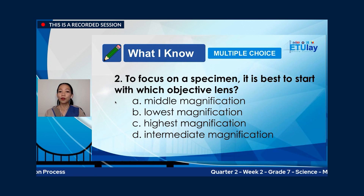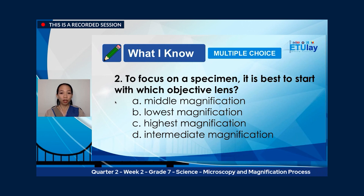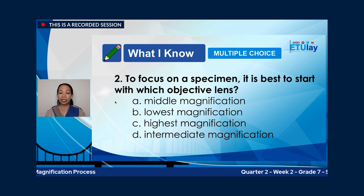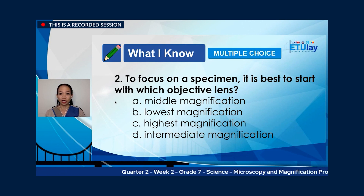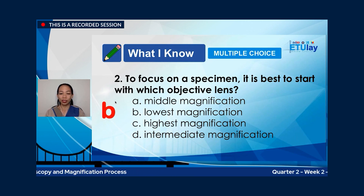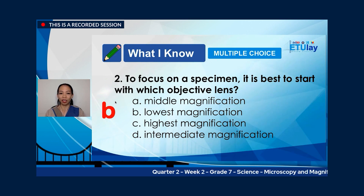Number two: to focus on a specimen, it is best to start with which objective lens? A. Middle magnification. B. Lowest magnification. C. Highest magnification. Or D. Intermediate magnification. The correct answer is letter B, lowest magnification. Remember to always begin with the lowest magnification.